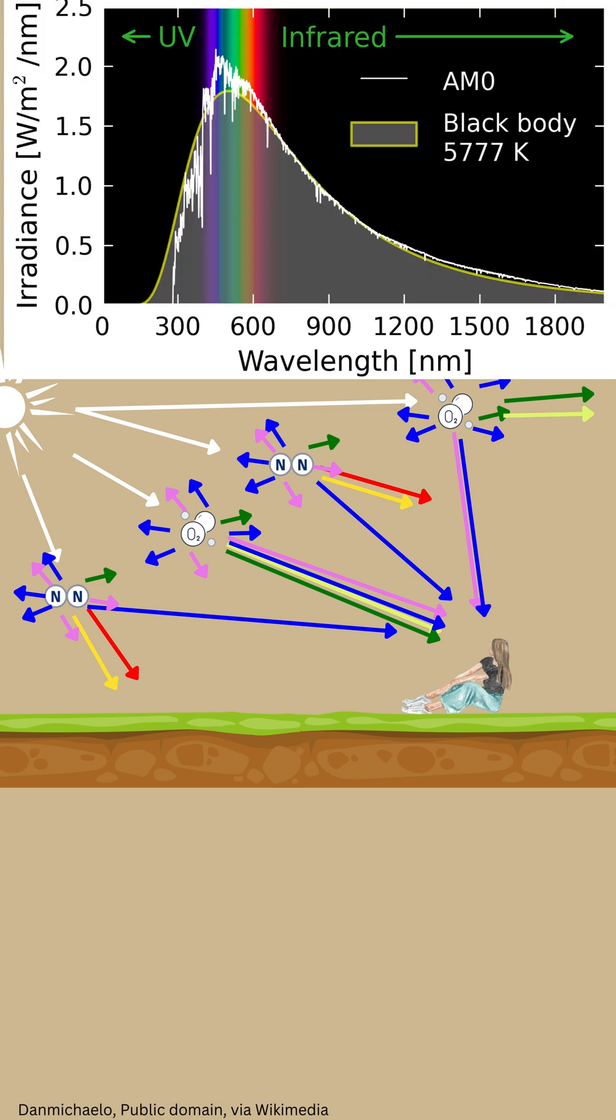However, the sun doesn't emit much violet light, and part of it is absorbed by the high atmosphere. Additionally, our eyes aren't very sensitive to violet.